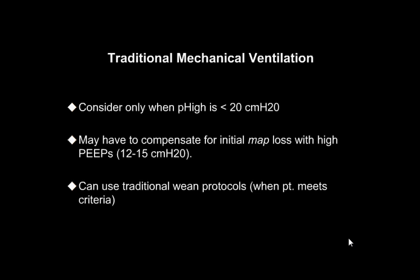If you're going to transition the patient to traditional mechanical ventilation and you think they can tolerate it, consider doing so only when your P-high is less than 20 centimeters of water. You may have to compensate for the initial mean airway pressure loss with high PEEP — in the 12 to 15 centimeters of water range or even above. Practitioners can use their traditional wean protocols when the patient meets criteria.